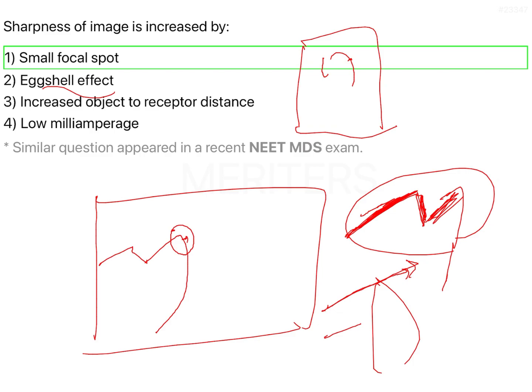Increased object to receptor distance is not going to help image sharpness. Rather, the object and the receptor should be as close to each other as possible. Whereas, the object and the x-ray source should be as far away as possible.